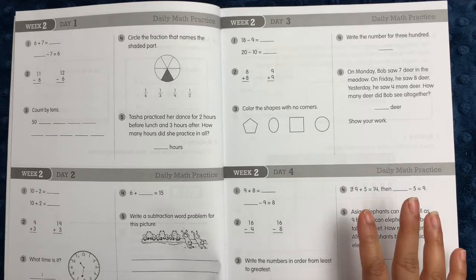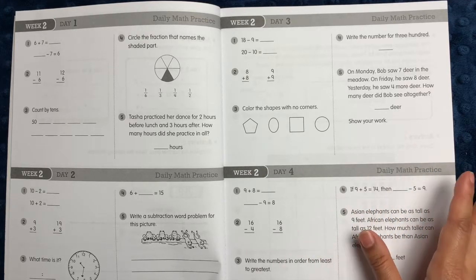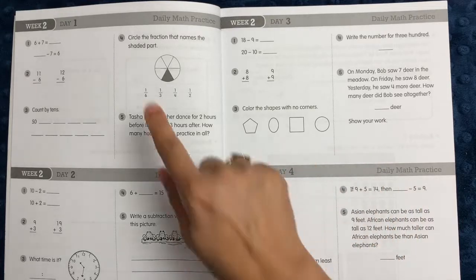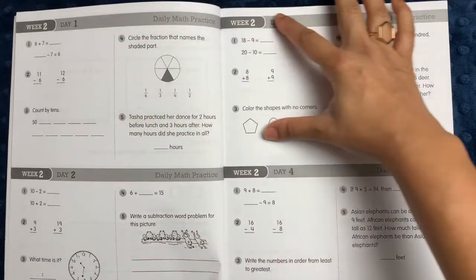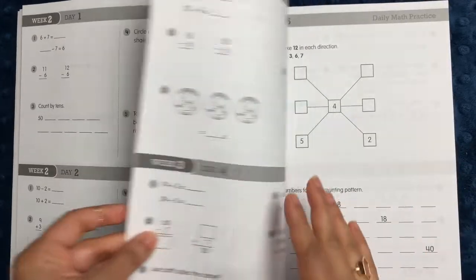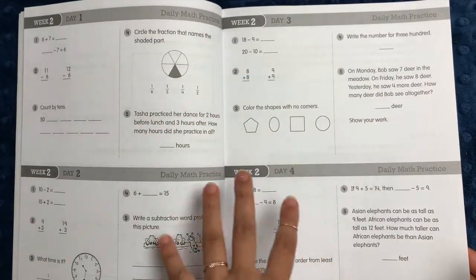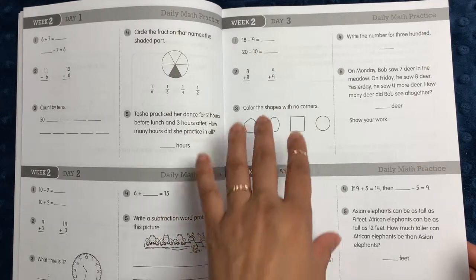I flipped to week two just so I can show you exactly how every single week is oriented in this book. It is designed to be a five-day-a-week program. Basically here you have day one, day two, day three, day four, and day five.